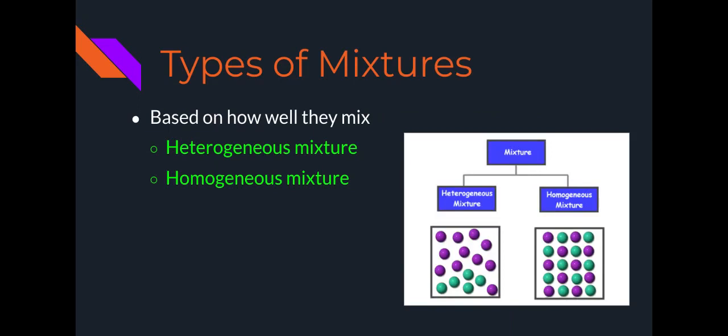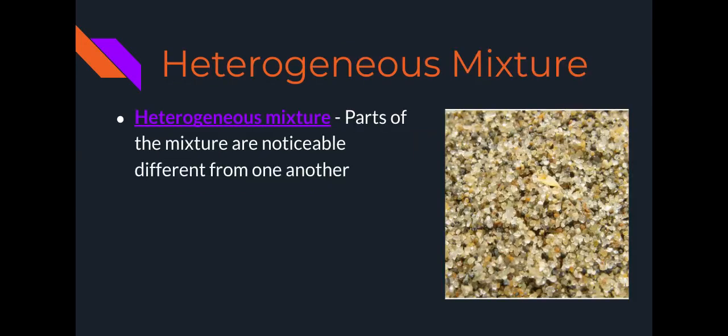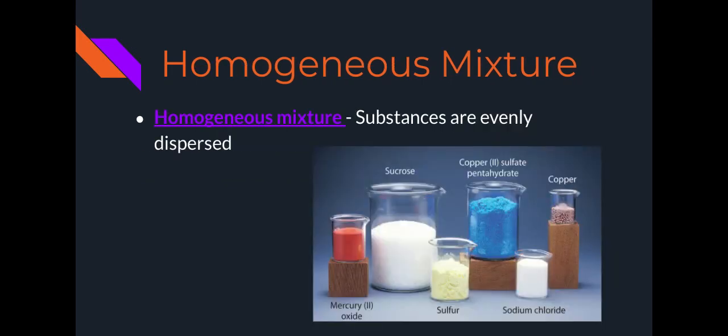Now there are different types of mixtures. We have heterogeneous mixtures and homogeneous mixtures. Hetero means different. So a heterogeneous mixture is going to have parts of the mixture that are noticeably different from one another. So in this picture, we have sand. Sand is a type of heterogeneous mixture. It's made up of different compounds, and you can see there's different colors and also different sizes. Now a homogeneous mixture is when substances are evenly dispersed.